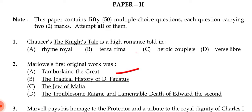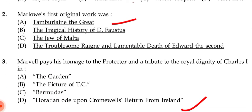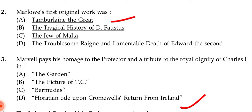Next question: Marlowe's first original work was — (a) Tamburlaine the Great, (b) The Tragical History of Dr. Faustus, (c) The Jew of Malta, (d) The Troublesome Reign and Lamentable Death of Edward II. The correct answer is (a) Tamburlaine the Great.